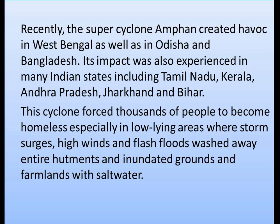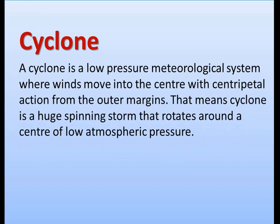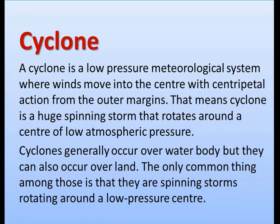Before knowing about Amphan, let's first understand what a cyclone is. A cyclone is a low-pressure meteorological system where winds move into the center with centripetal action from the outer margins. In short, a cyclone is a huge spinning storm that rotates around a center of low atmospheric pressure. Cyclones generally occur over water bodies but can also occur over land. The key common feature is that they are spinning storms rotating around a low pressure center.